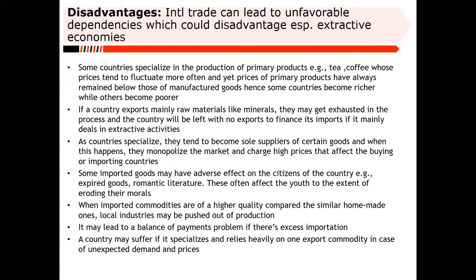The disadvantages: if you specialize in exporting unprocessed items, you tend to always be on the receiving end of the value chain. Cocoa is a very good example — West Africa produces about 60–70% of cocoa beans in the world, but most of the chocolate processing happens in Europe. The value in dollar terms that European countries command on processing those cocoa beans is way more than 10 times — in many instances, 100-fold more than what Africa earns.